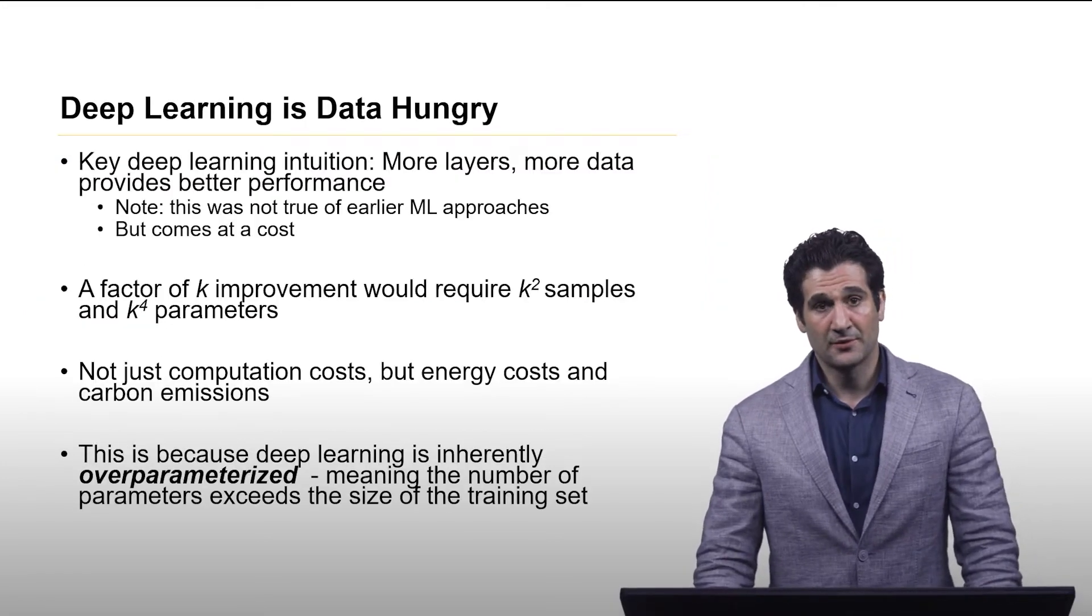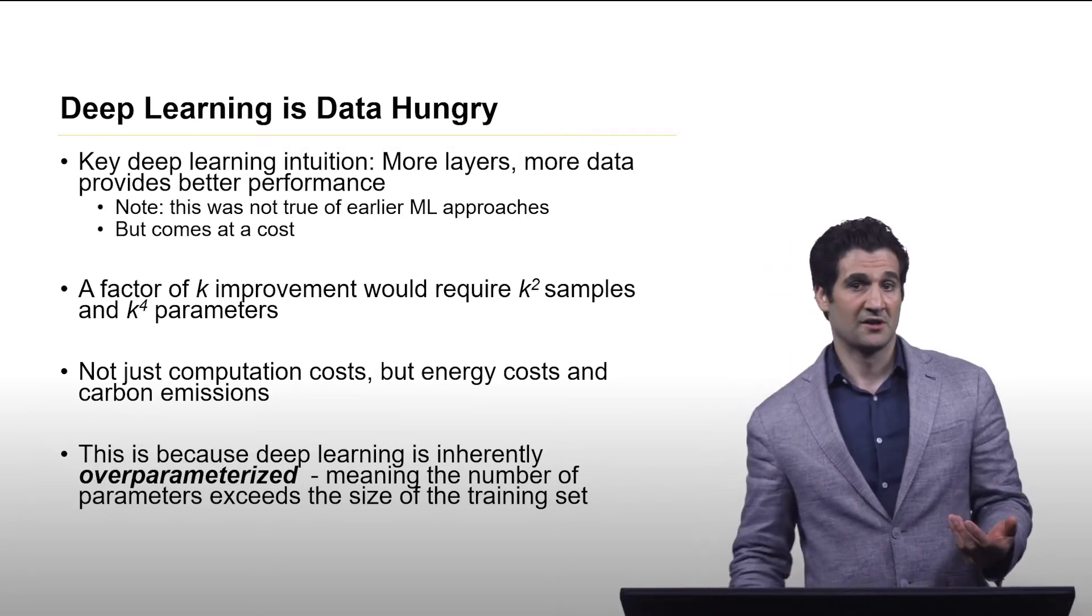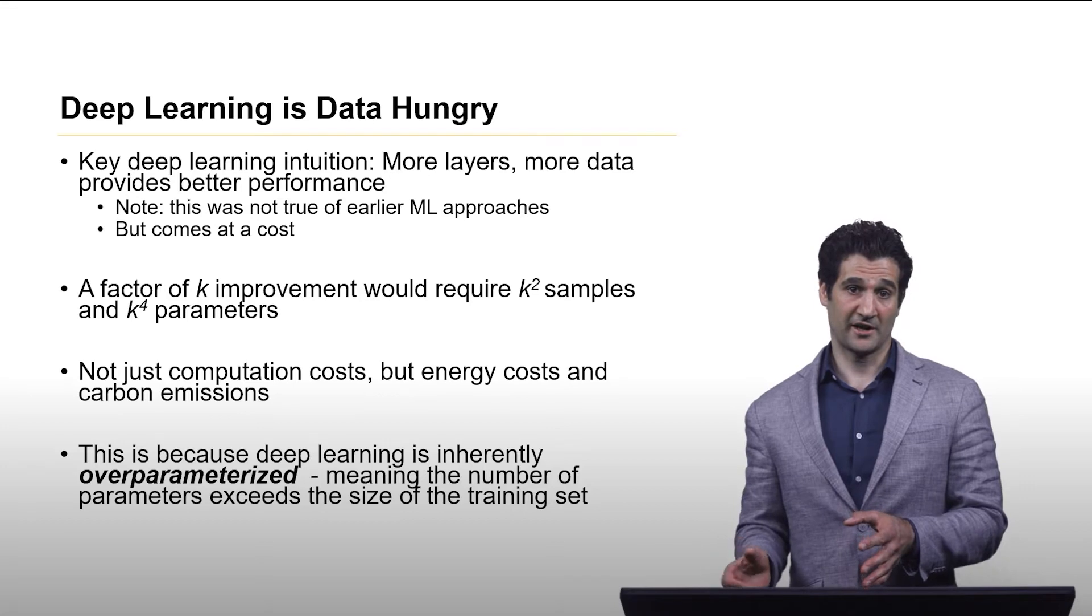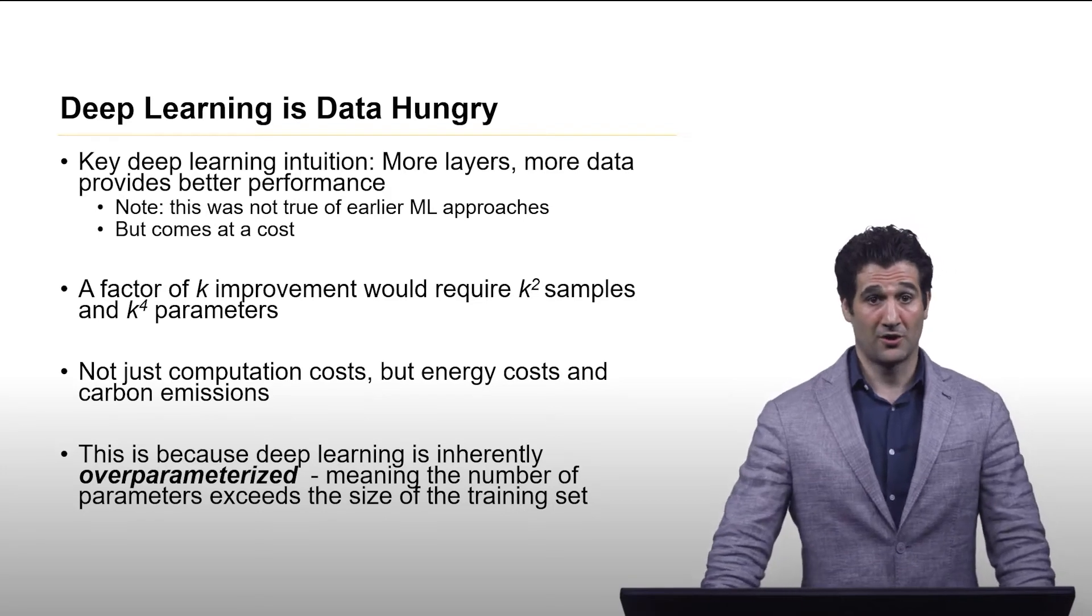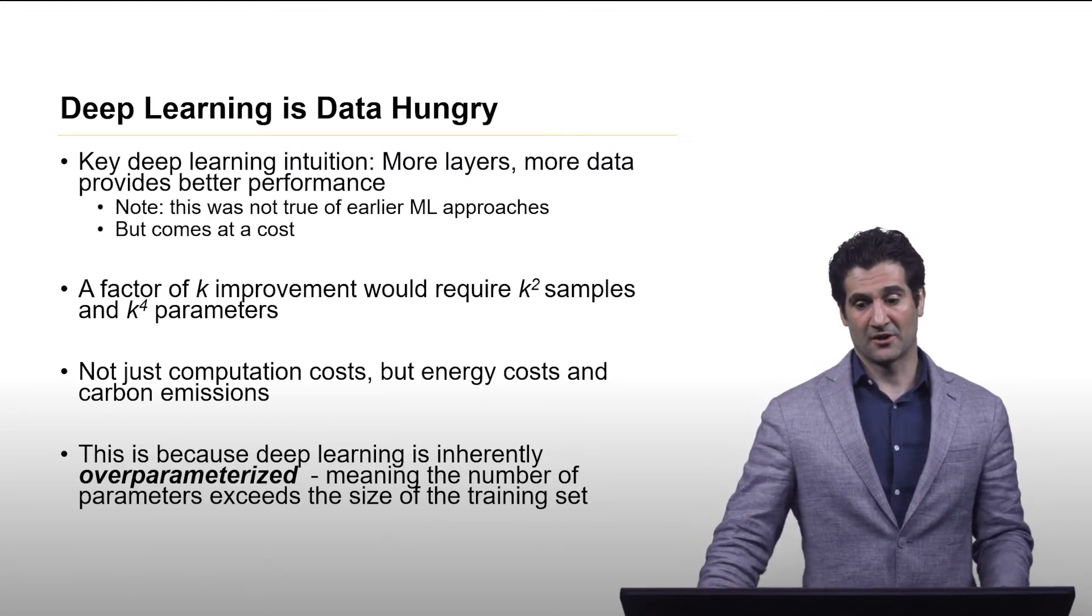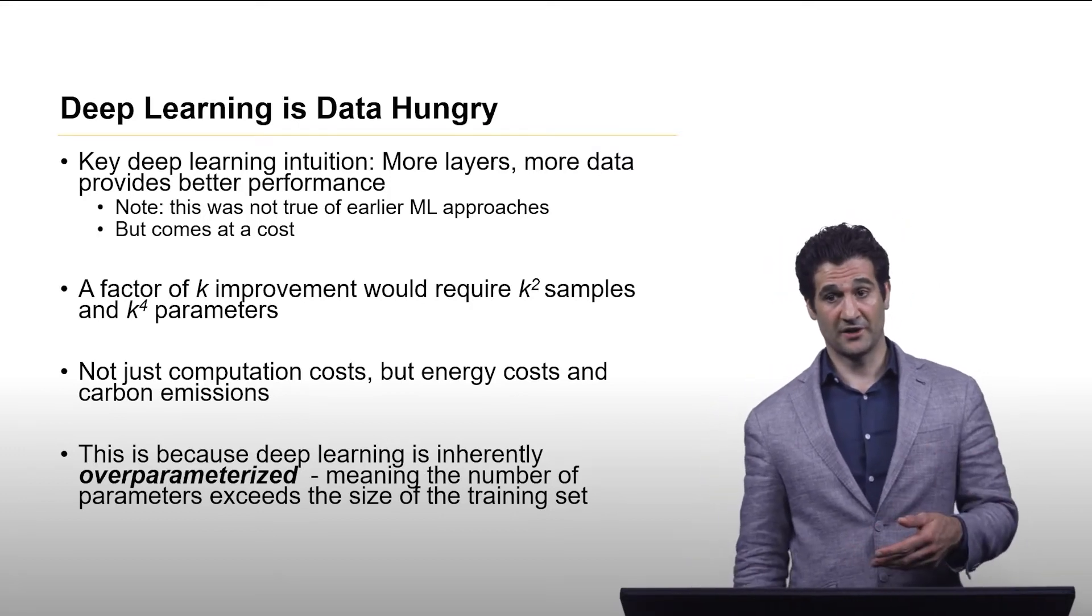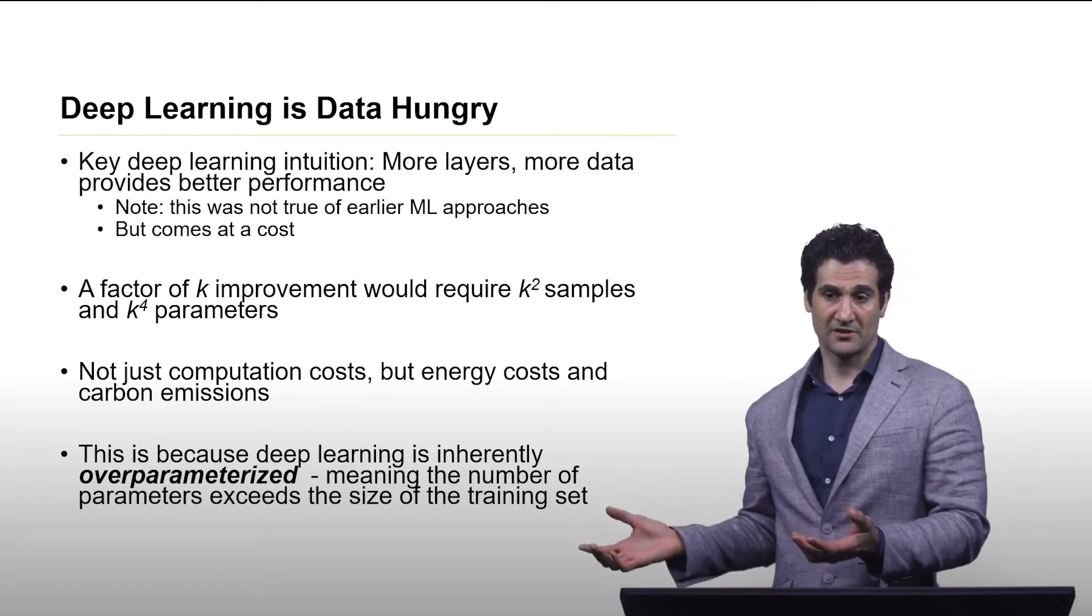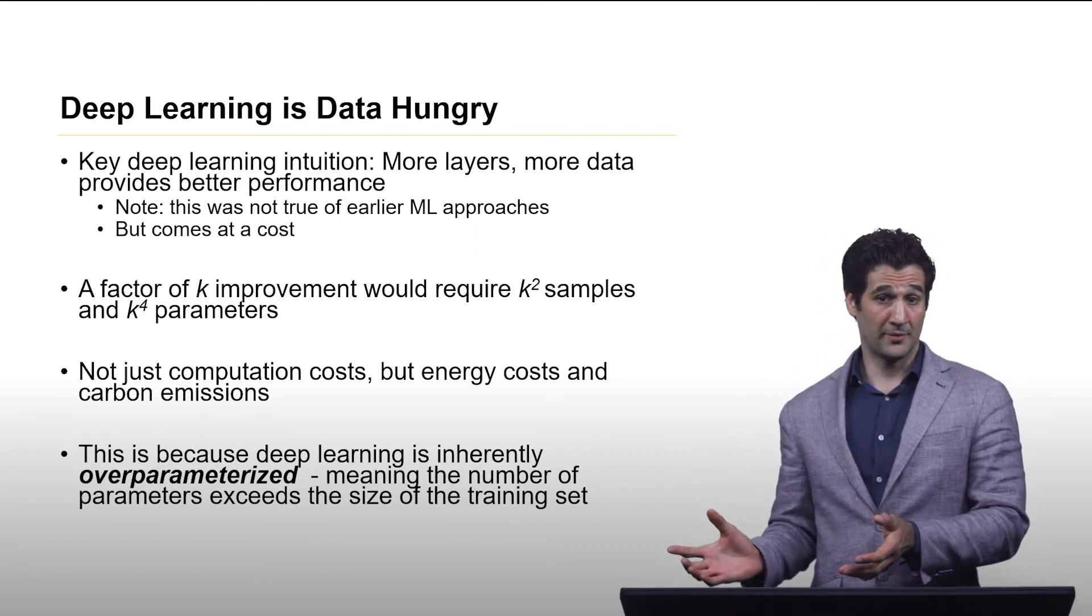So the first thing is deep learning is data hungry, and the key behind deep learning is you have more layers of your neural network and you have more data to train on, you're going to get better results, and this overall has been quite true. This was not necessarily true of early machine learning approaches. There was kind of a point of diminishing returns when you threw data at something like a decision tree. It started overfitting and falling apart if it got too much data. So deep learning was able to zoom past that.